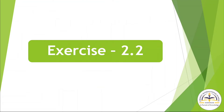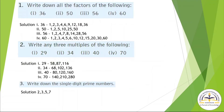Now let's solve Exercise Number 2.2. Question Number 1: Write down all the factors of the following. First, 36. The factors of 36 are 1, 2, 3, 4, 6, 9, 12, 18, 36.